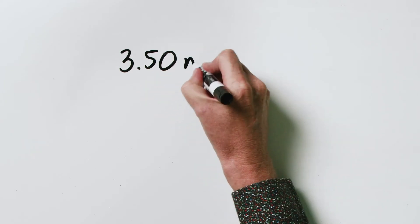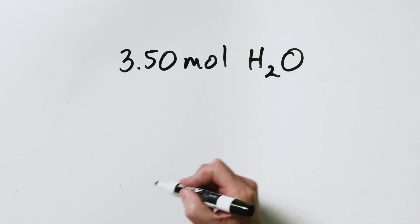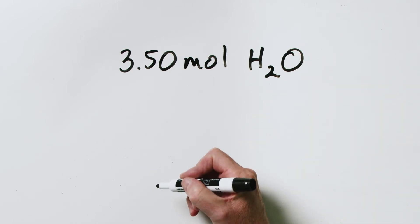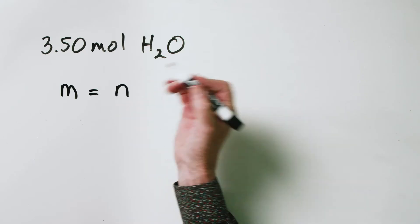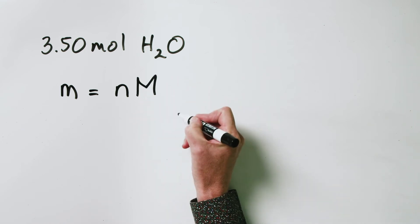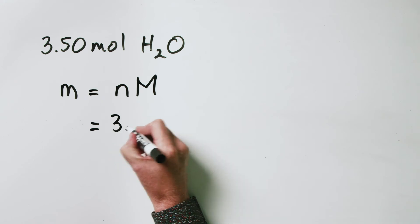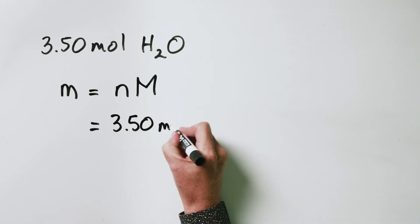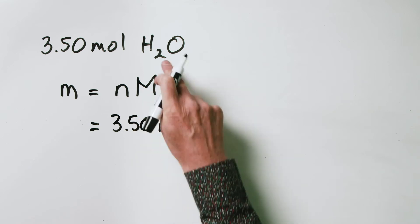Let's expand further on the relationship between number of moles, mass, and molar mass. Let's say we have 3.50 moles of water. What mass does that correspond to? We go back to our trusty equation. The mass is equal to the number of moles multiplied by the molar mass big M. The amount we have is 3.50 moles, and we multiply that by the molar mass of water.